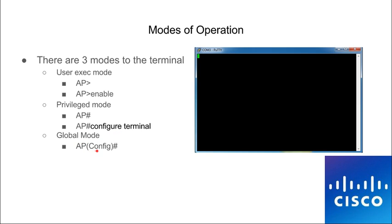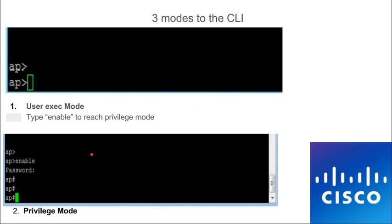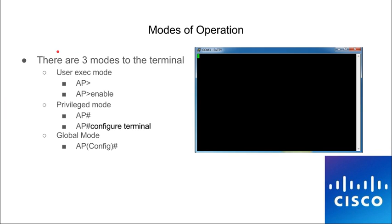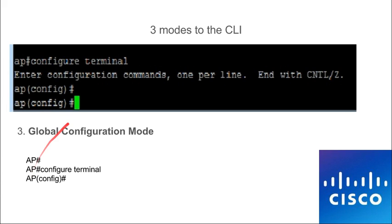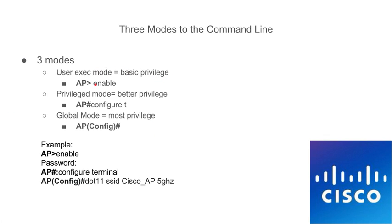Global configuration mode is where we're going to be mostly as we configure this. As soon as you get that black screen, hit Enter and you'll get into user exec mode. If it's factory reset correctly, type 'enable' — it will ask for the password, type 'Cisco' with a capital C. That gets you into privilege mode. Then type 'config terminal' or 'config t' to get into global configuration mode. To reiterate: enable, config t, and you will get there.